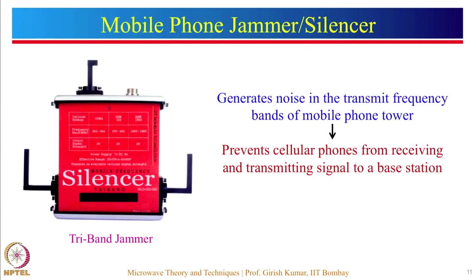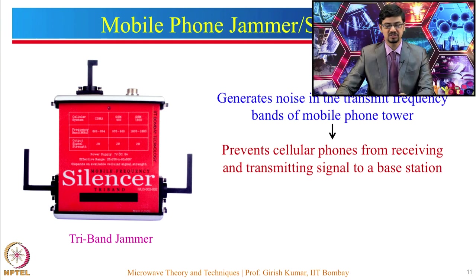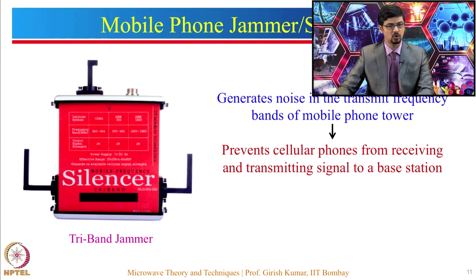Next is a mobile phone jammer or silencer system. A mobile phone jammer generates noise in the transmit bands of a mobile phone tower — the downlink frequency bands — which prevents cellular phones from receiving and transmitting signals to the base station. The downlink frequency bands are jammed, preventing mobile phones from sending or receiving any data or voice. This is a typical image of a tri-band jammer, with antennas for three different bands: CDMA, GSM 900, and GSM 1800.